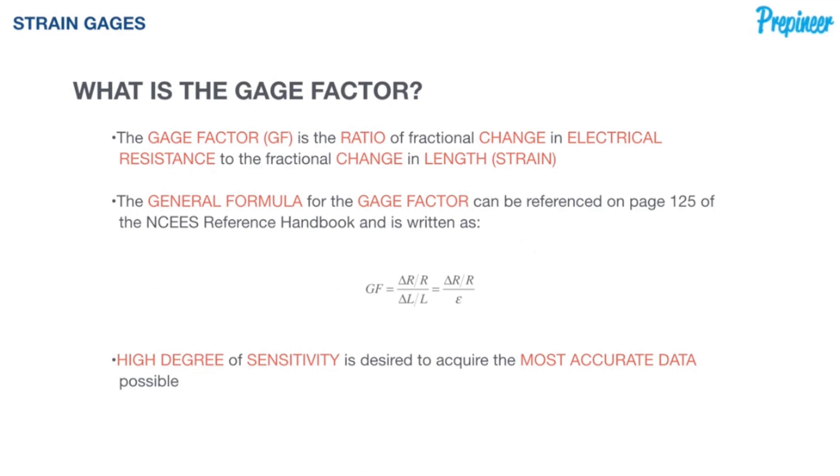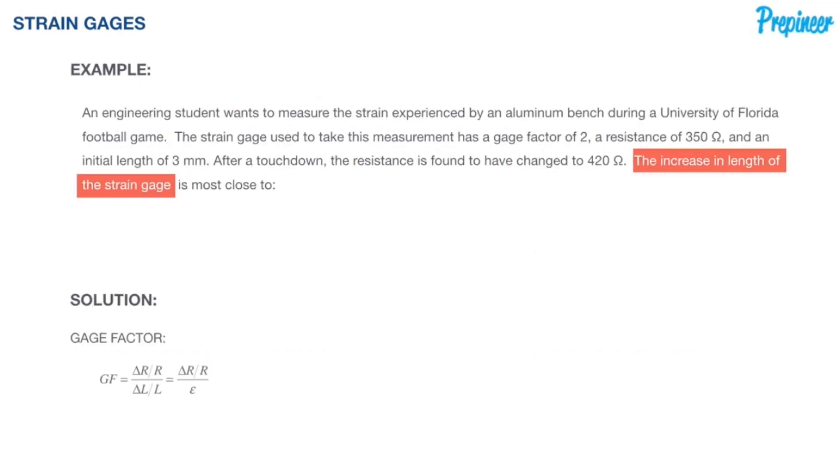With our gauge factor formula, let's go ahead and pull that over to our practice problem. We know GF is the gauge factor, we got the change in resistance, we have the nominal resistance when it's just placed on prior to deformation, we got our change in length, our nominal length, which is the initial length, and the normal strain sensed by the gauge.